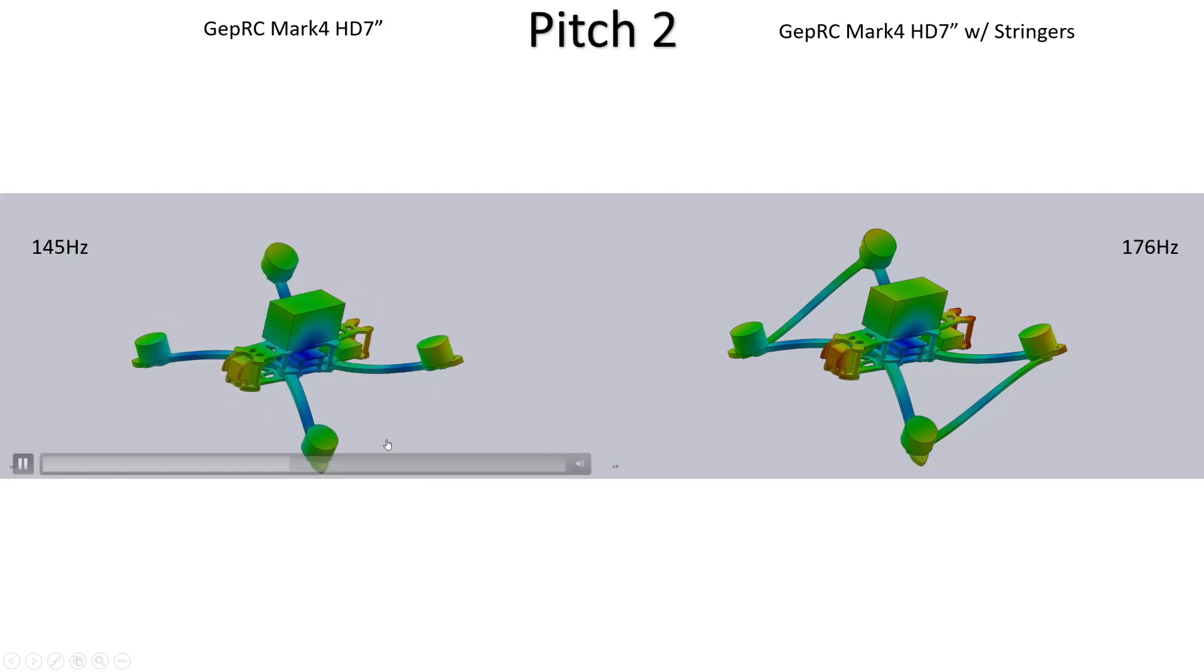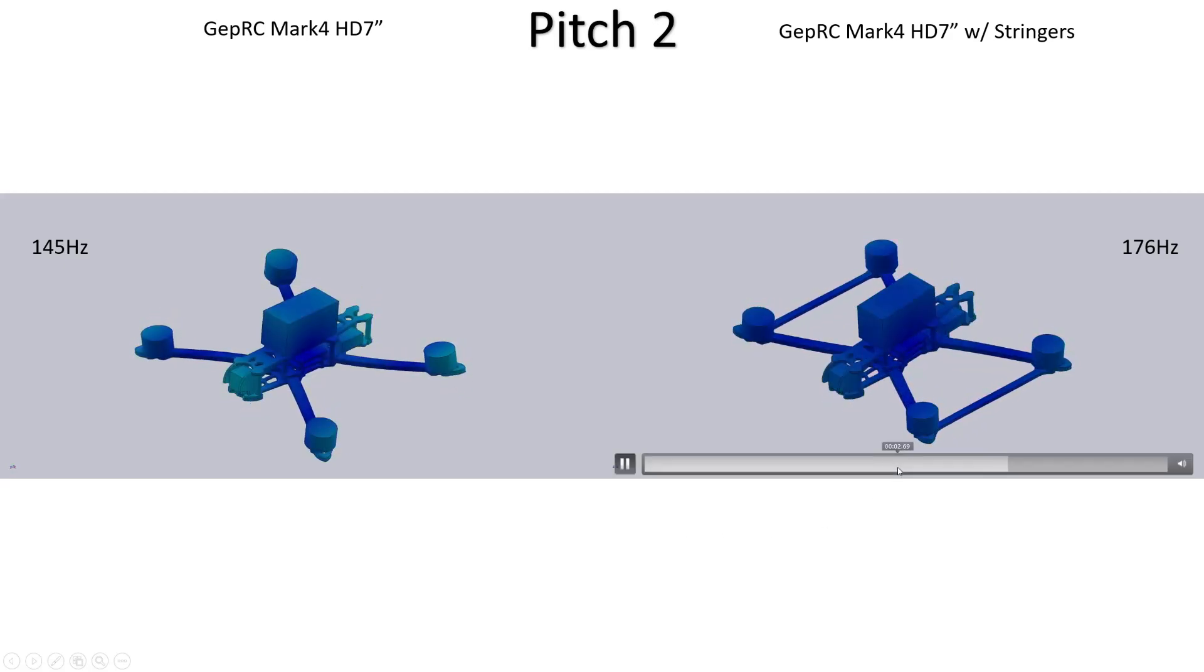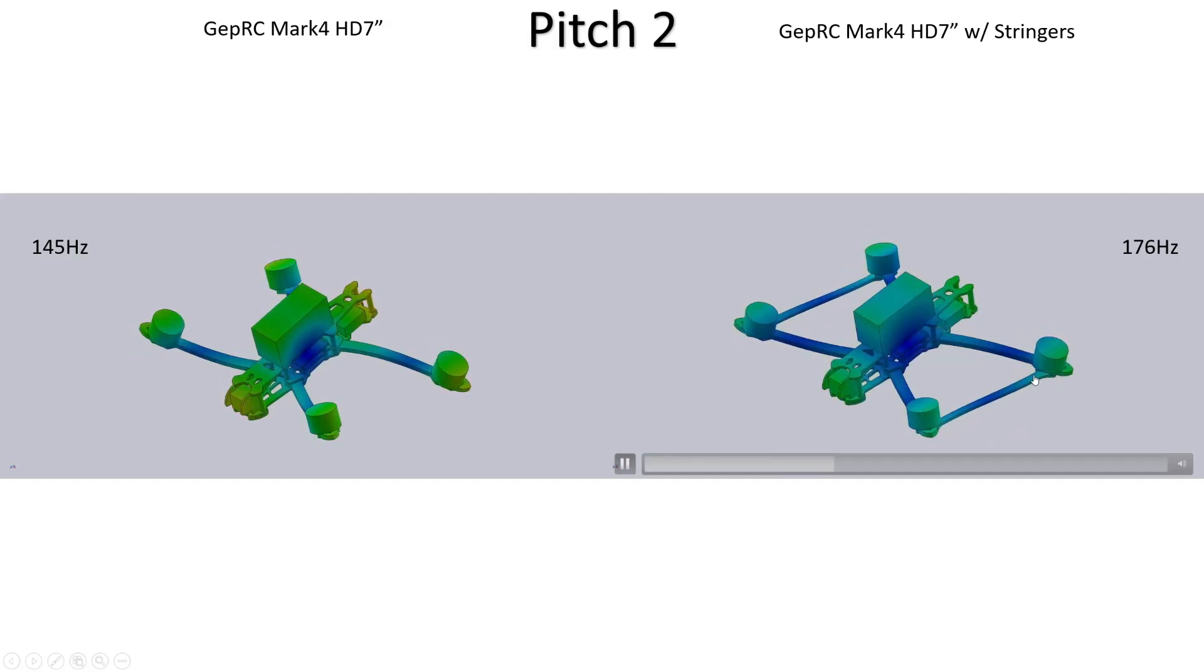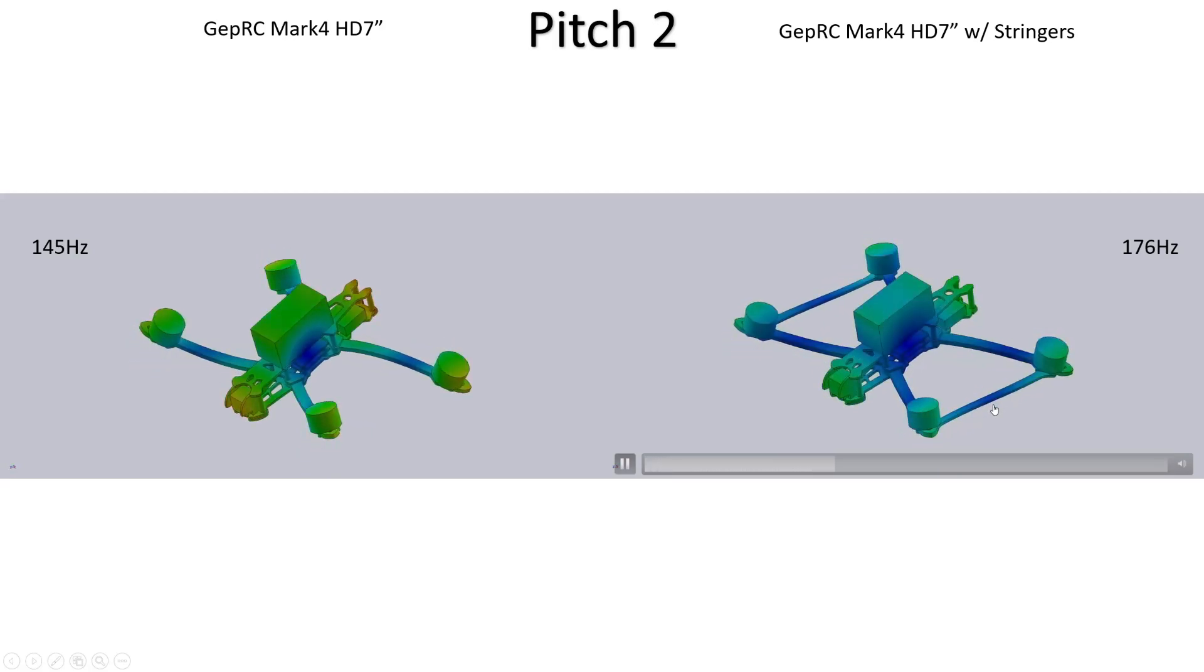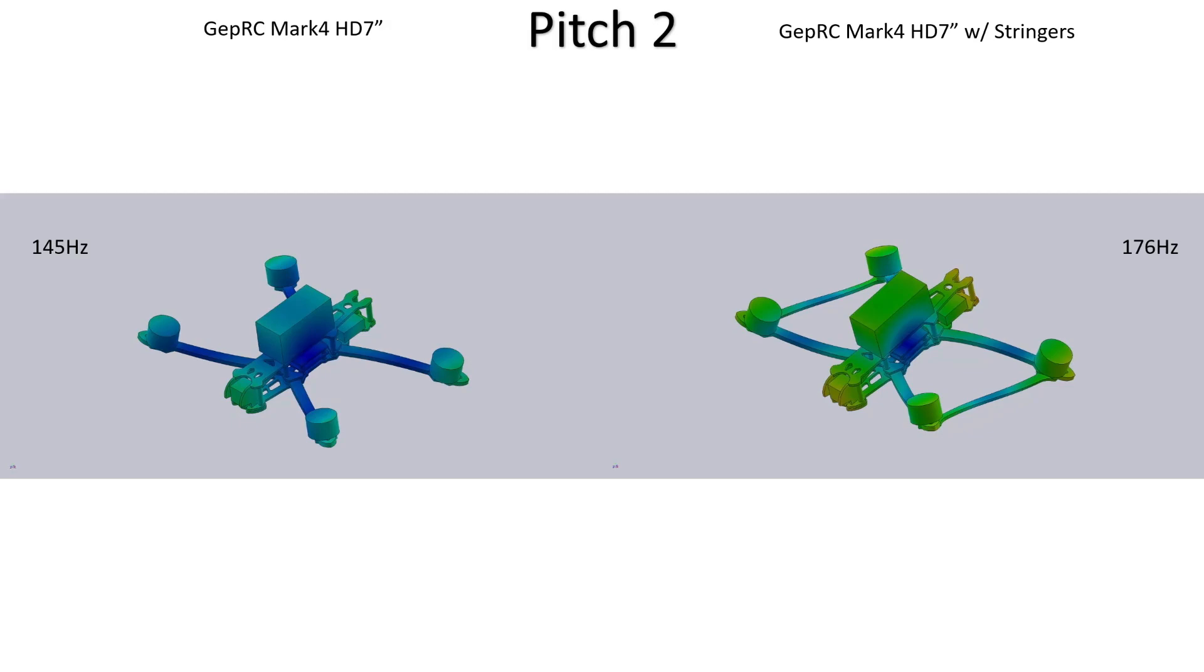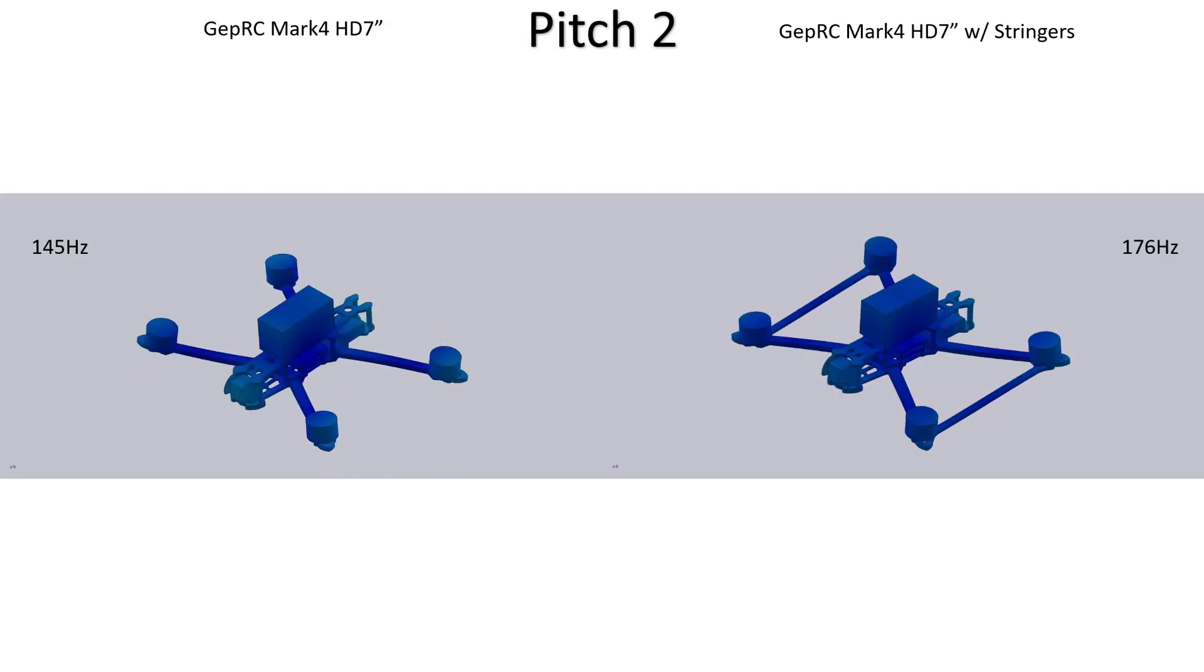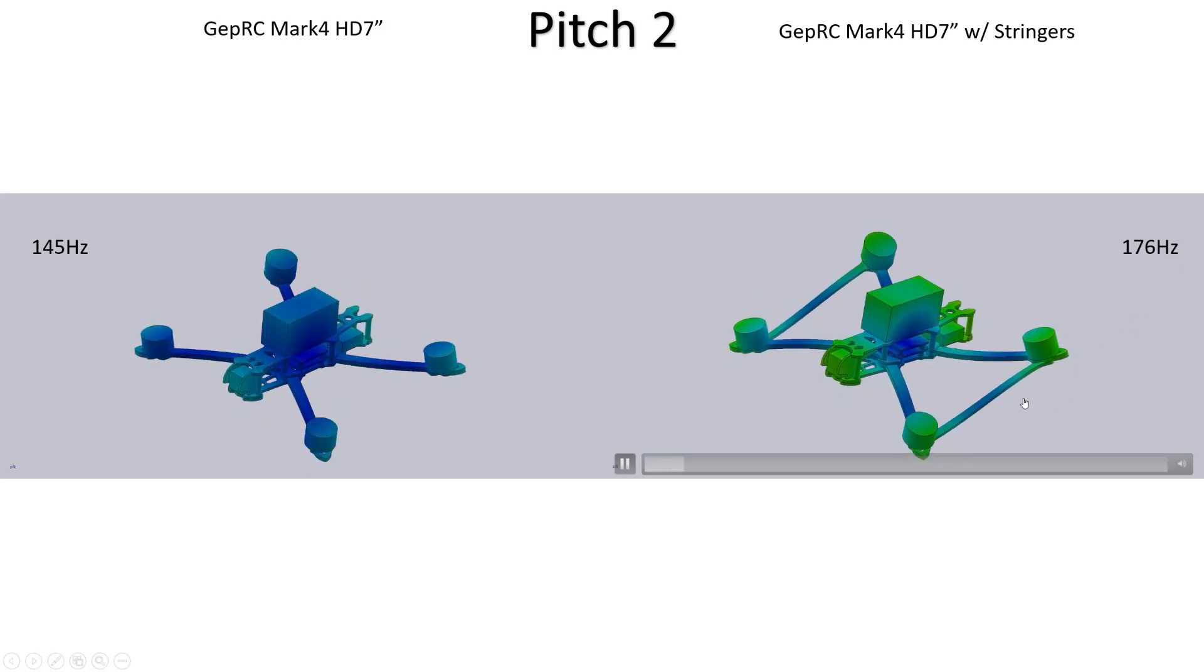If we look now at the second pitch mode we can see that without the stringers it's quite typical, we've just got the quad pitching back and forth as the front motors move up and down and the rear ones move up and down in counterpoint to that. When we add in the stringers though something quite interesting happens. You can see that there's quite a lot of bending of the stringers by the motors at both the front and back as the motors move up and down. Again you're bending more carbon so you're adding stiffness to the mode and whenever you add stiffness to a mode of vibration that pushes the frequency up. So we see a benefit here shifting the frequency higher, we go from 145 hertz up to 176 hertz and that benefit is going to be felt in your ability to move your filter cutoffs.